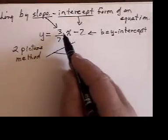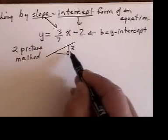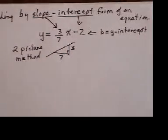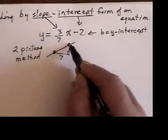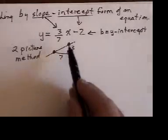And I notice on the fraction it has a 3 higher than a 7. So, I put a 3 higher than a 7 on my picture. What that tells me then is how to get from one point to another point. I go over 7 and up 3.